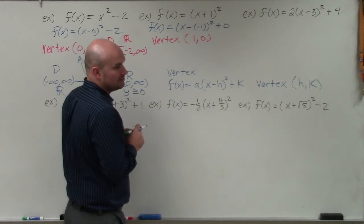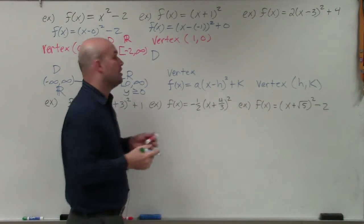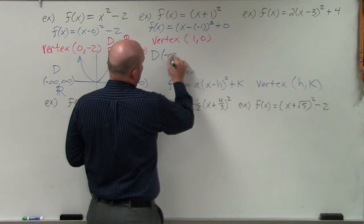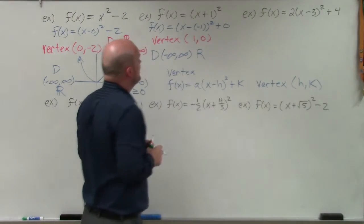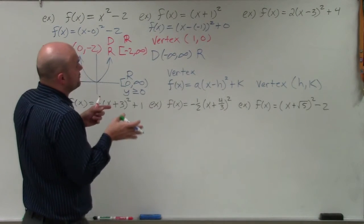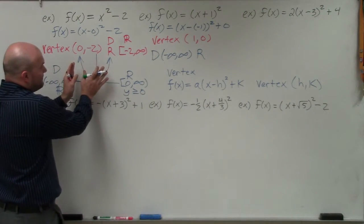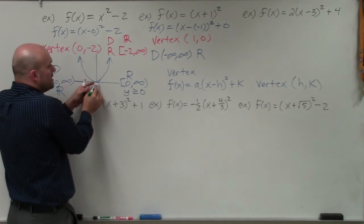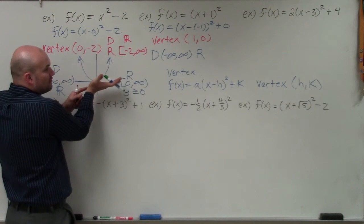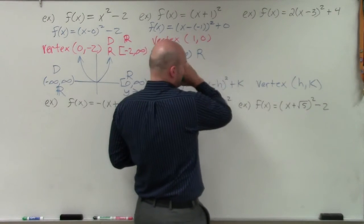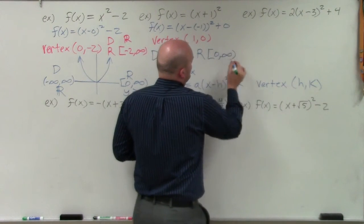Now let's talk about domain and range. The domain, again, is all real numbers — from negative infinity to infinity. For the range, the only thing that's happened to this graph is it's been shifted to the right, so instead of the vertex being at 0, 0, now the vertex is at negative 1, 0. The lowest y value is still going to be 0, so my range is going to be from 0 to infinity.